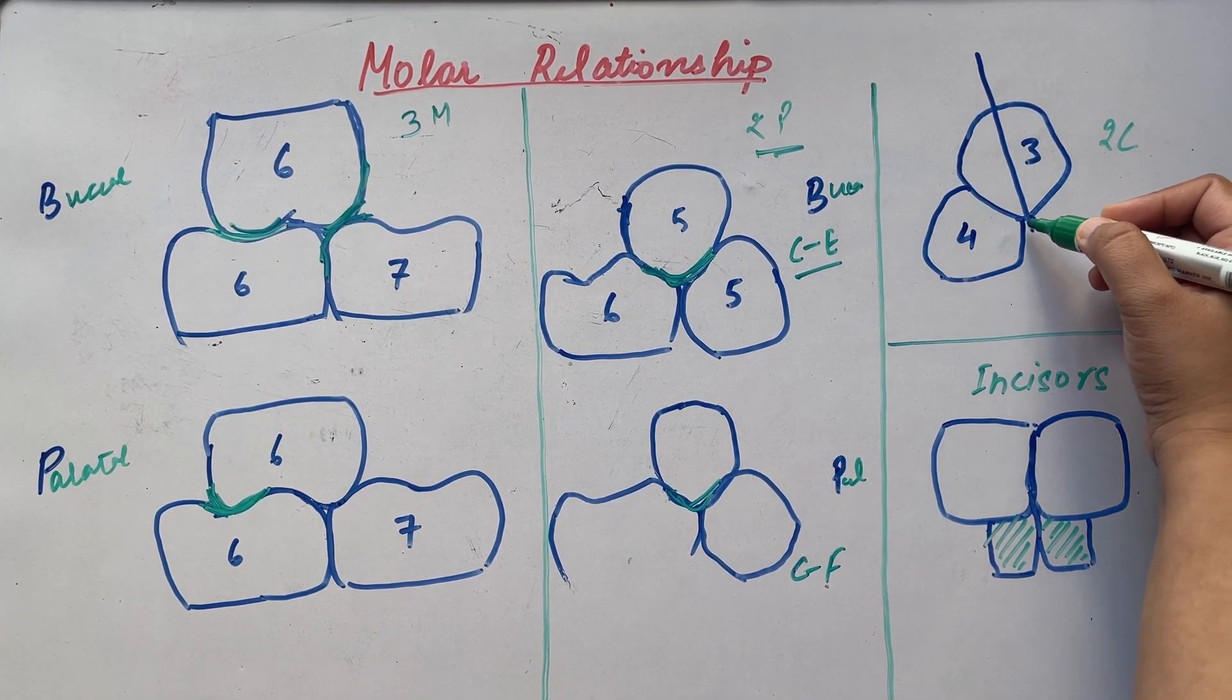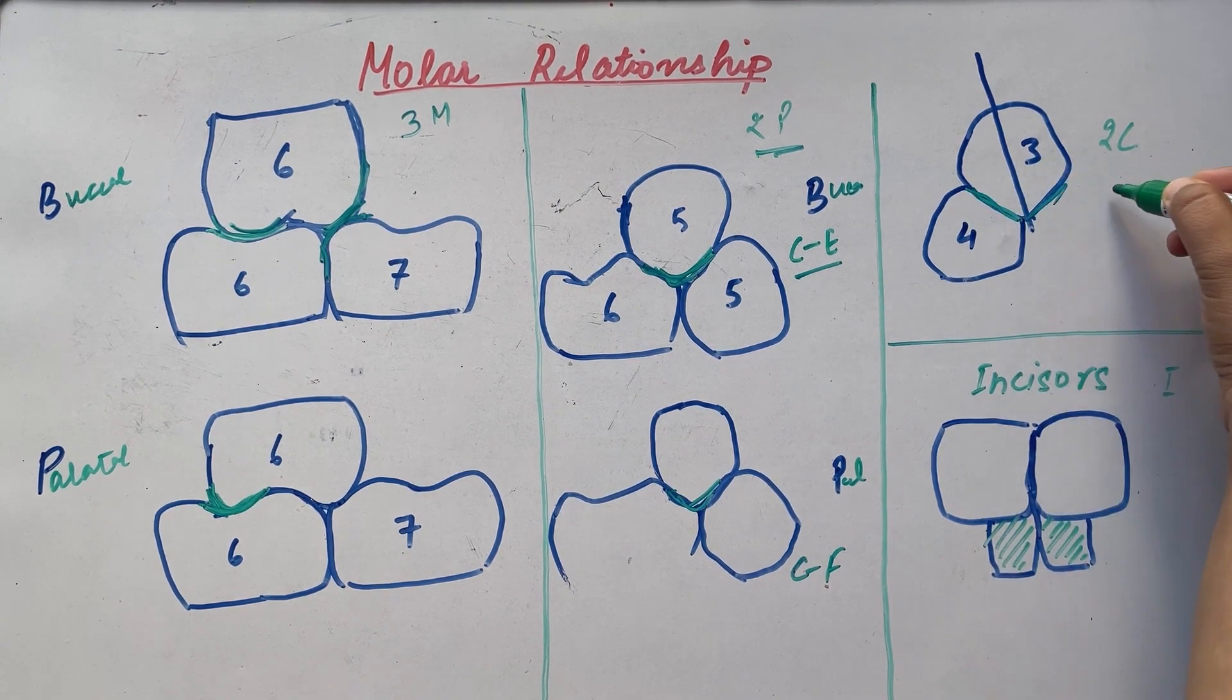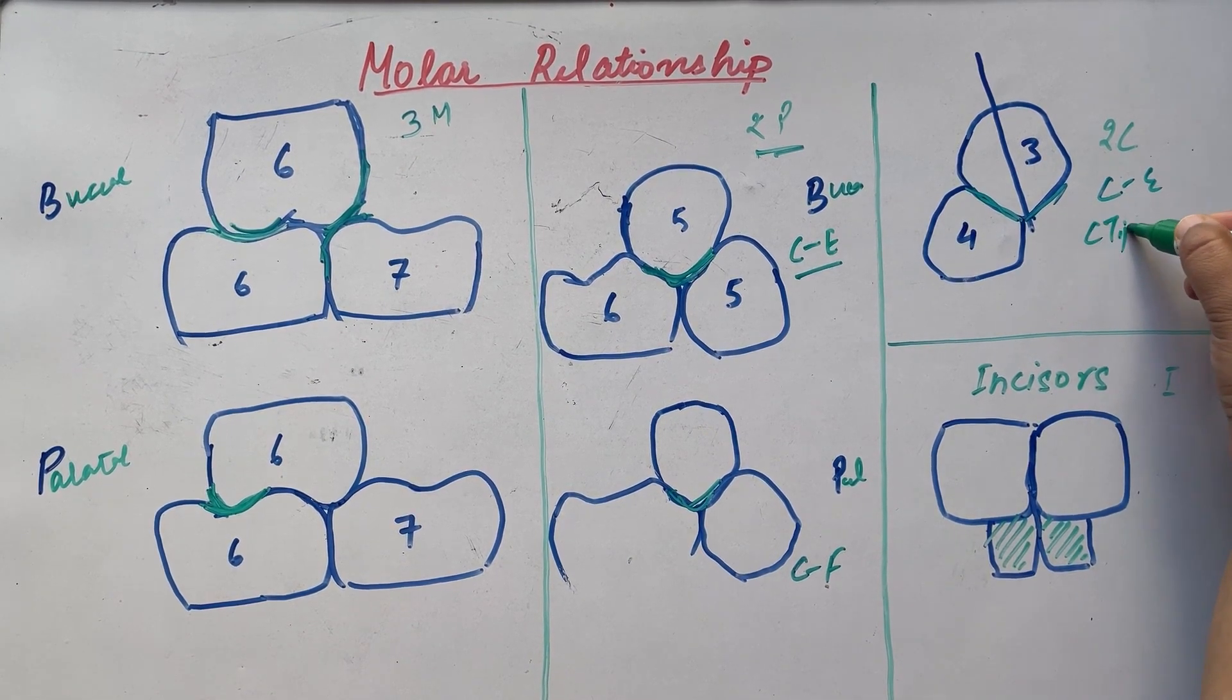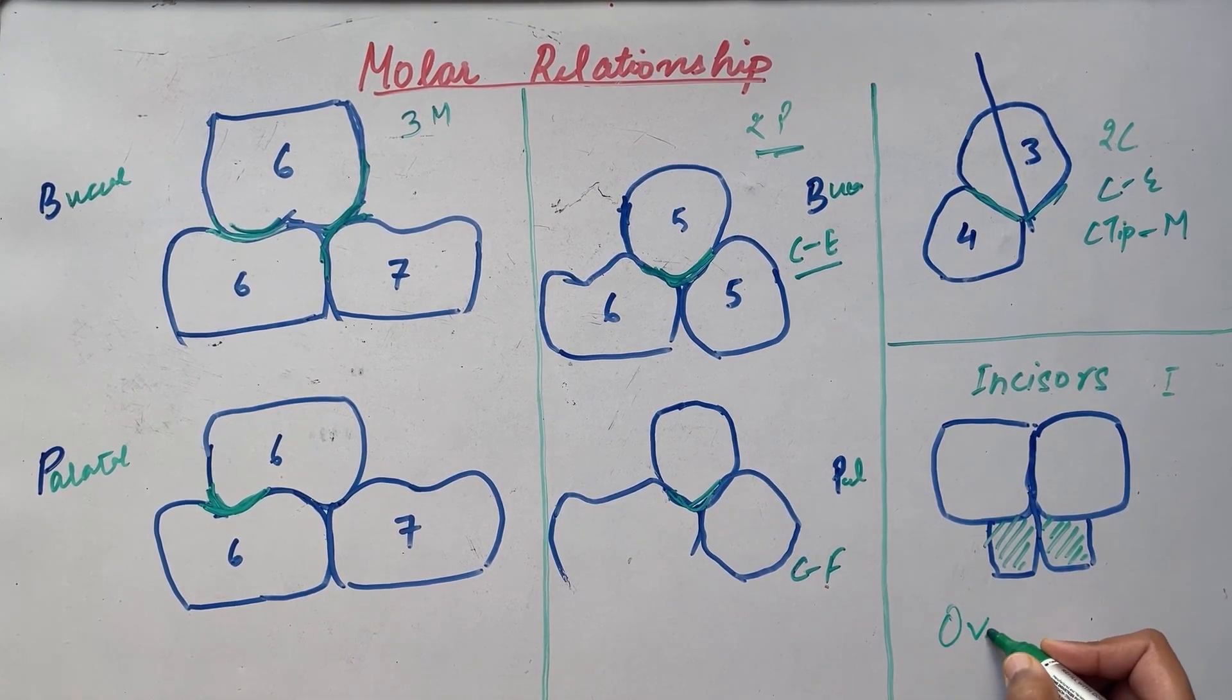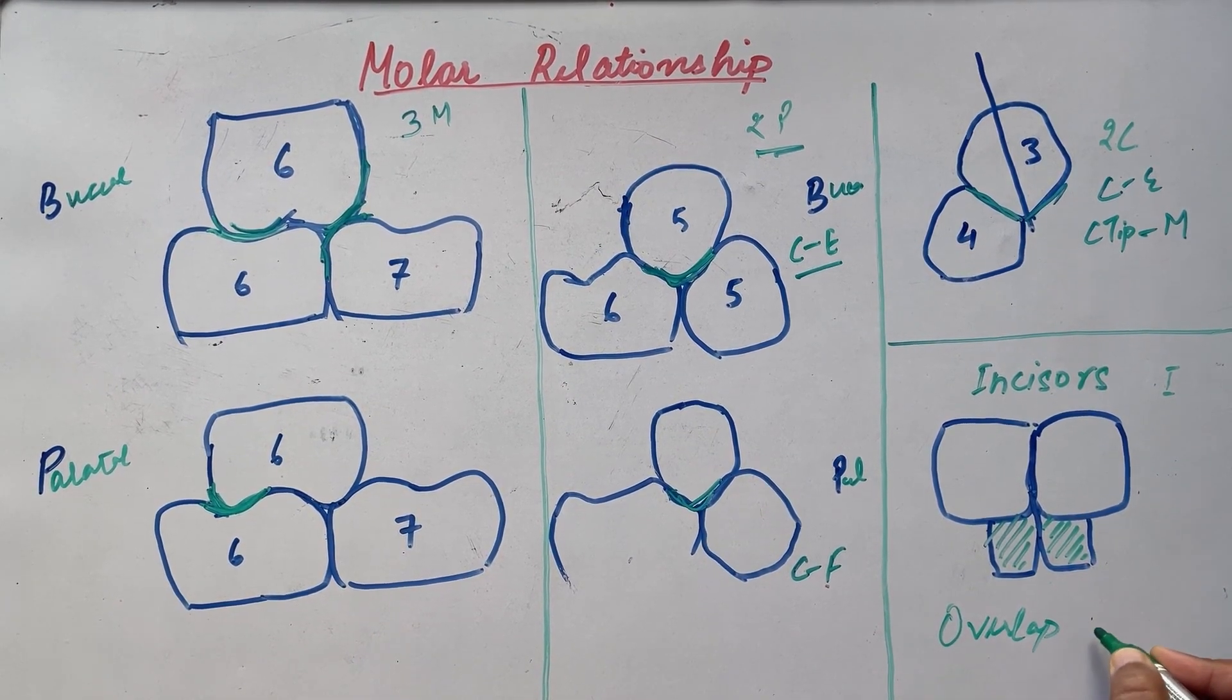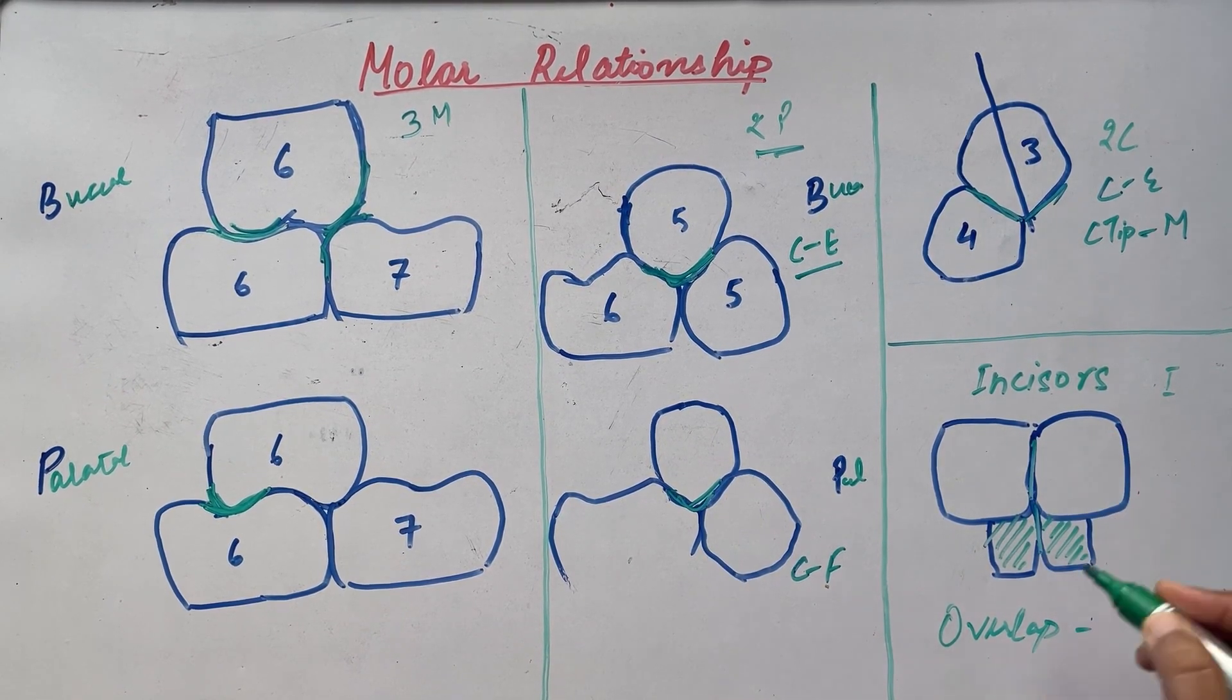Then is the canine. The maxillary canine has a cusp embrasure relationship with the mandibular canine and first premolar, and the upper canine tip is slightly mesial. Last point of the 1st key is related to incisors. The maxillary incisors overlap the mandibular incisors and the midlines coincide.